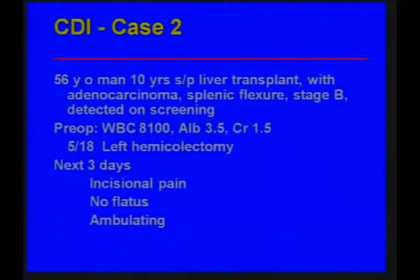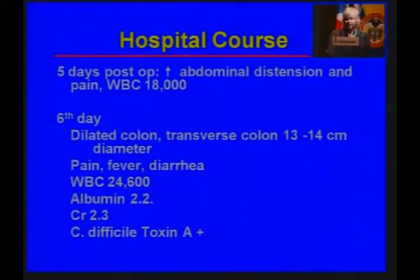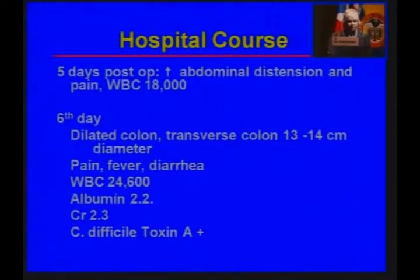The second case is a 56-year-old man who had had a liver transplant, in whom I found an adenocarcinoma at the splenic flexure on his screening colonoscopy — a stage B cancer. Preoperatively, his white blood cell count was 8,100, albumin was 3.5, and creatinine was 1.5 — his normal levels. He had a left hemicolectomy. Three days later he had some pain at the incision site but wasn't passing gas, though he was up and walking. Two days after that — five days post-surgery — his abdomen became very distended with severe abdominal pain, his white count rose to 18,000, and on a flat plate the transverse colon was 13 to 14 centimeters in diameter.